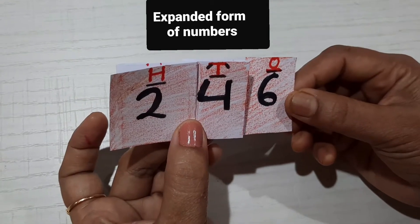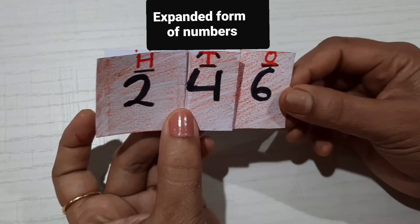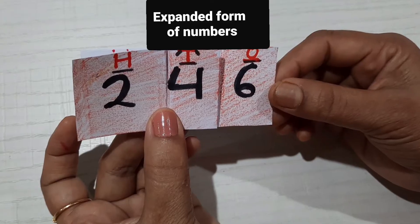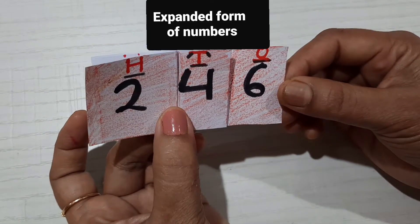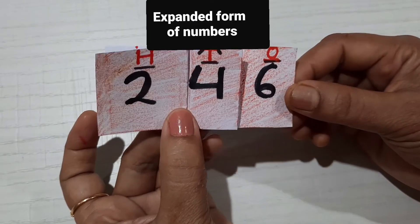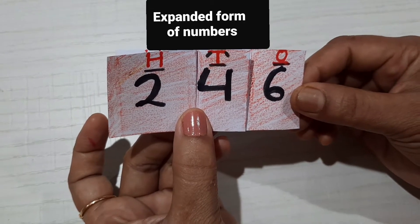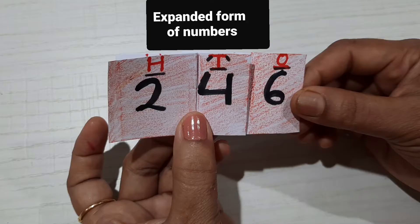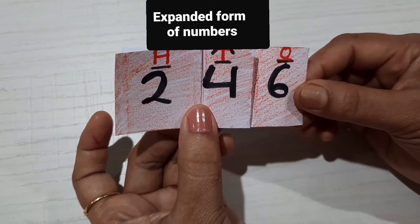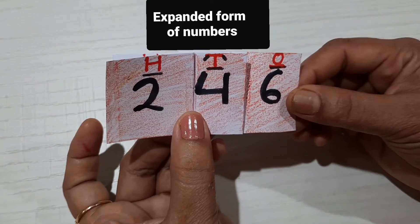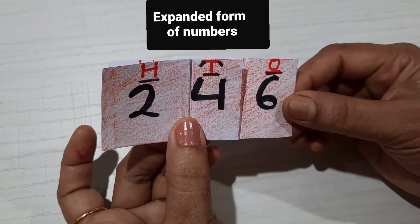Hello everyone, this video will help explain place value and expanded form of numbers to students. Here you can see the number is 246. Expanded form means the sum of place value of each digit.